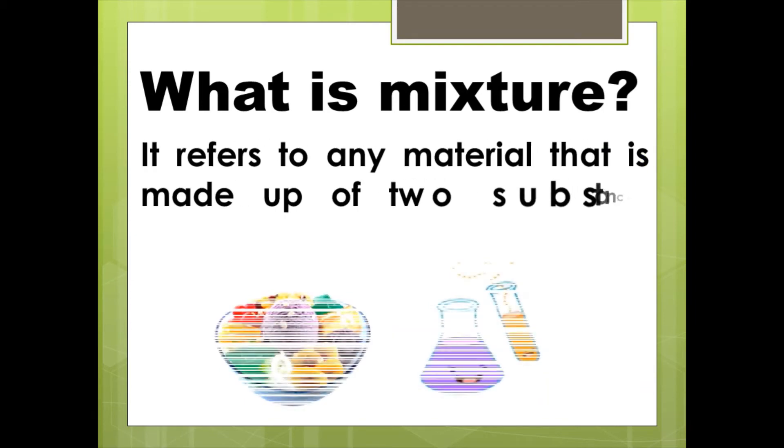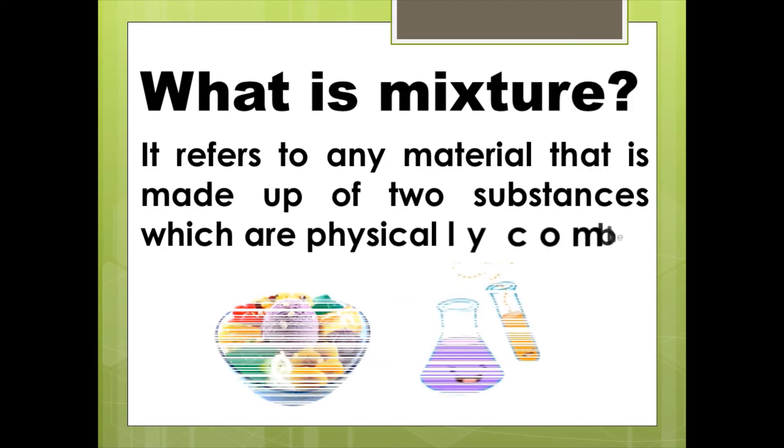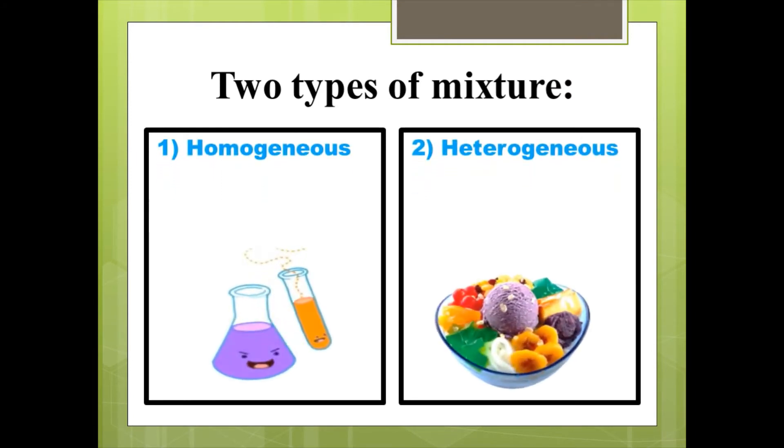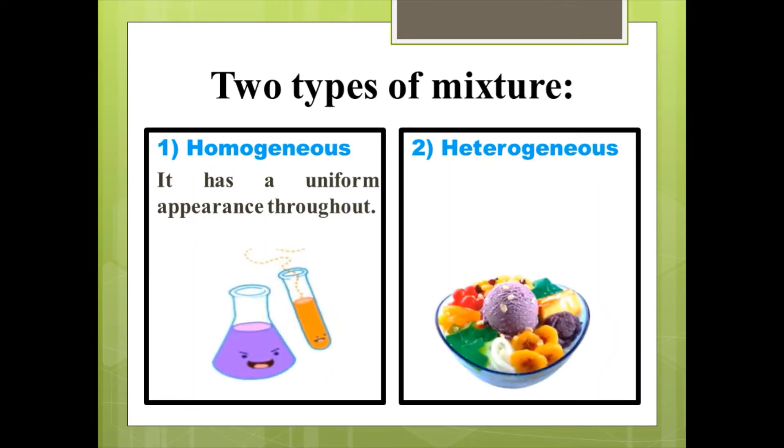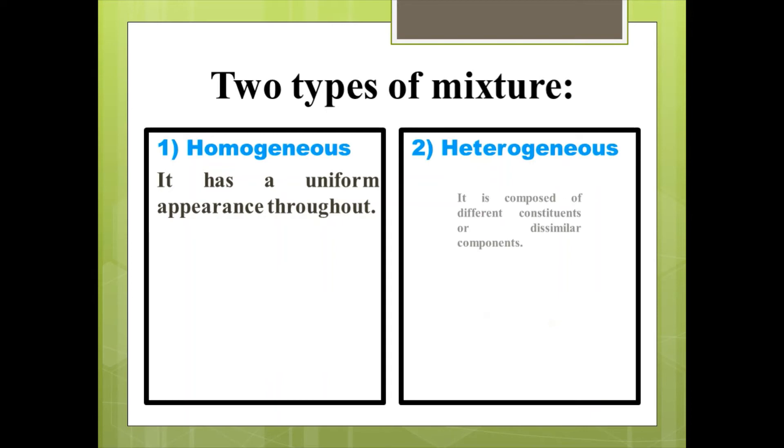We have two types of mixture: homogeneous mixture and heterogeneous mixture. What do you mean by homogeneous mixture? It has a uniform appearance throughout. While heterogeneous mixture is composed of different constituents or dissimilar components.